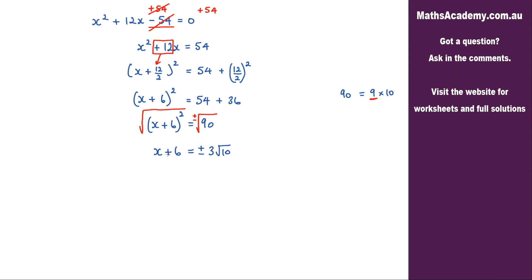Now the next thing I need to do is to eliminate this 6 here and I do that by subtracting 6 from both sides. On the left hand side we've got x and on the right we've got minus 6 plus or minus 3 root 10.